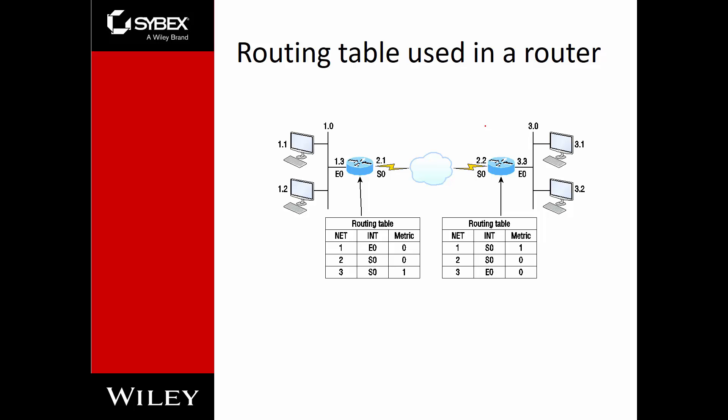Routing tables and how they're used: routers learn what's directly connected, and then they also learn via routing protocols how to forward traffic. For example, if we're dealing with the network on the left — call it A — and we want to send to the three network, our routing table knows: if anything for the three network comes up, send it out serial zero. Anything for the three network, send out serial zero, with a hop count of one.